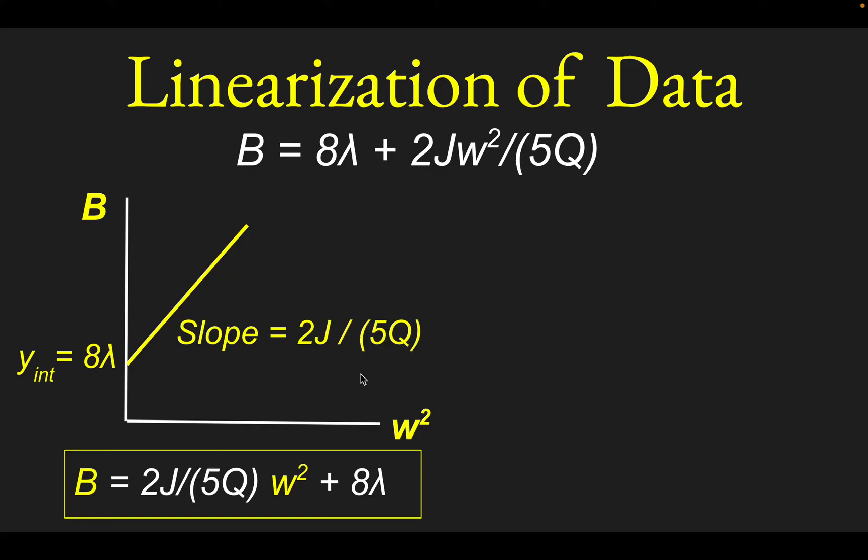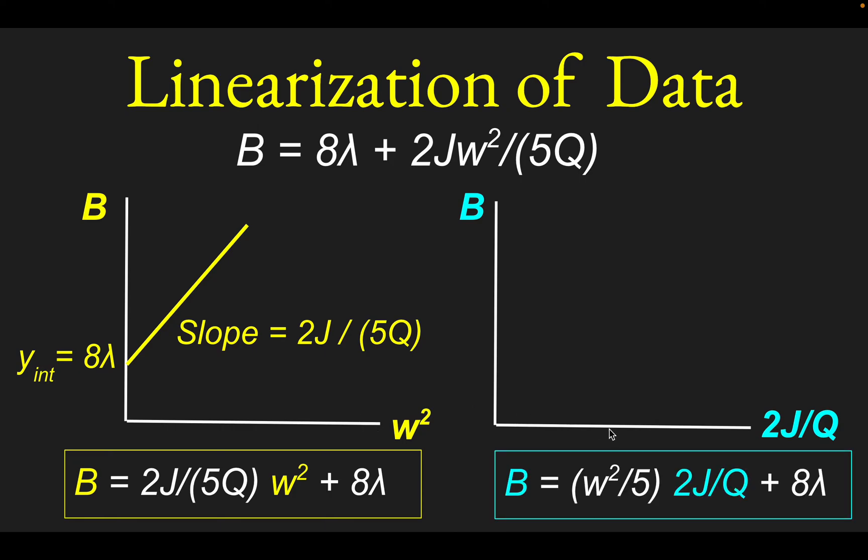Another plot somebody might choose to make, depending on what variables you're measuring, what if we made a graph of b against 2j over q? So you might want to pause this to think about whether this would be a line or not and what the slope of the intercept would be. What I would do is rearrange it to look like y equals mx plus b. So there's this rearrangement of it. I just kind of pulled out the 2j over q from this term, leaving a w squared over 5 in the front. Well, so this would be linear because b is proportional to 2j over q. And so the coefficient of the 2j over q would be the slope. It's w squared over 5. And then this leftover term would be your plus b, or it would be 8 lambda.